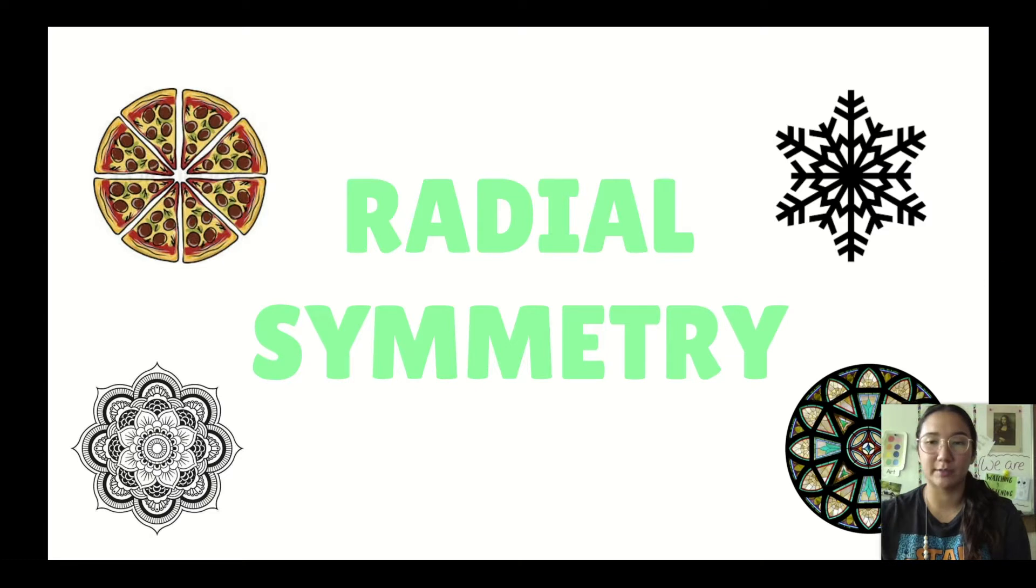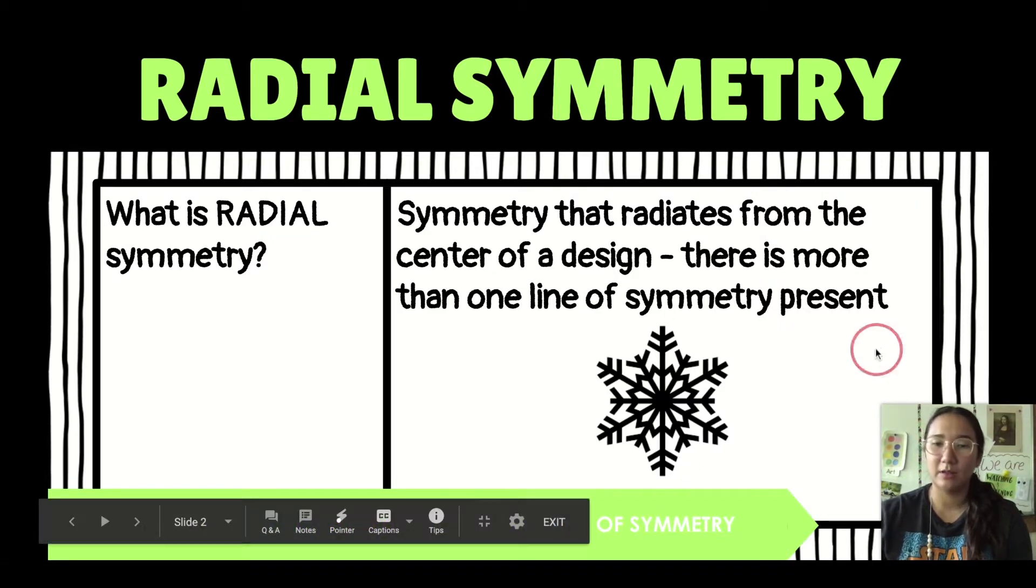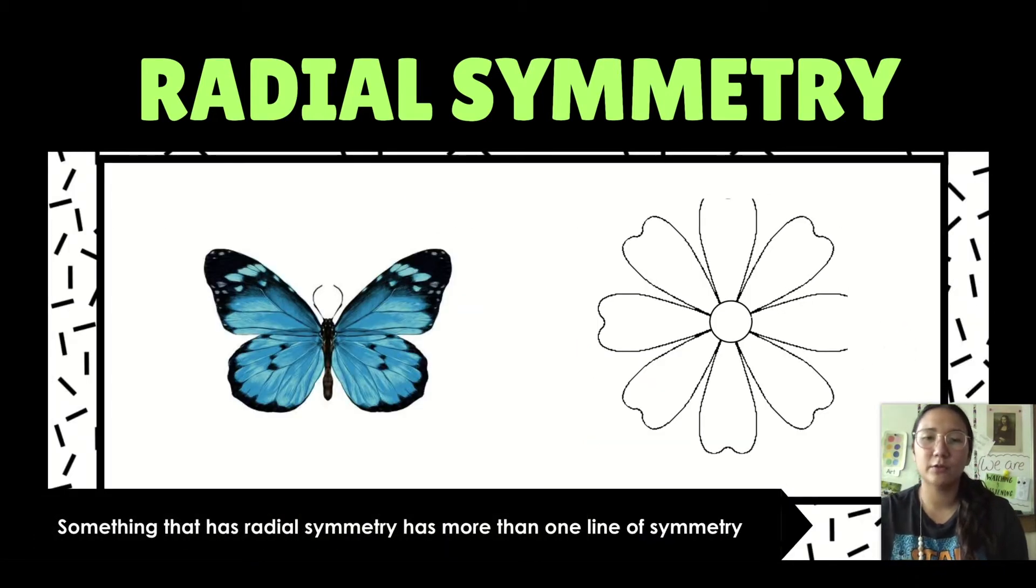Radial symmetry is symmetry that radiates from the center of a design, and there will be more than one line of symmetry present. With the snowflake, it is symmetrical going down the middle, but it is also symmetrical if you go horizontally or diagonally in both directions. Our butterfly has its line of symmetry, and we can fold it in half just long ways. But if we tried to fold it up and down or diagonally, it would no longer be symmetrical.